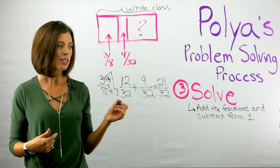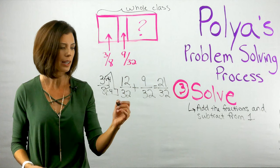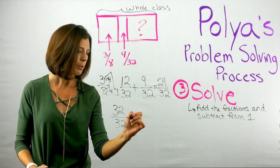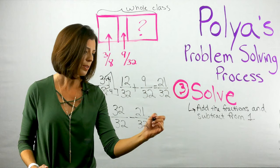Now I can go ahead and subtract this from my whole. So I know that my whole is one whole, but if I'm dealing in thirty-seconds I want it to be thirty-two over thirty-two and I'm going to subtract twenty-one thirty-seconds to get eleven thirty-seconds.